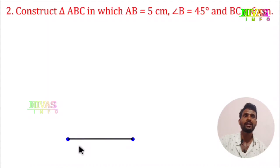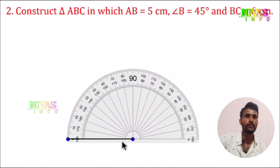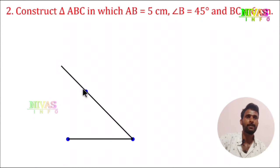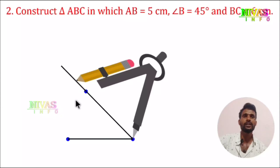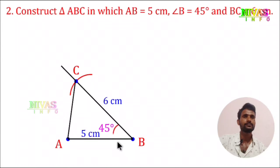Now I draw the triangle. Angle B is equal to 45 degrees. I draw the angle at point B using a compass and protractor. Then BC is equal to 6 cm, so I take 6 cm on the scale and mark point C on the angle line. We connect points A, B, and C to complete the triangle. We can take measurements.